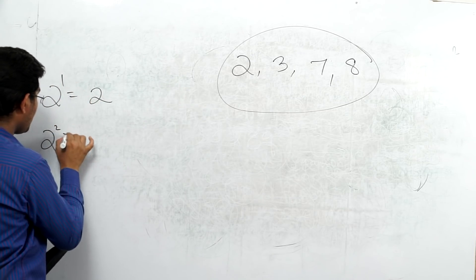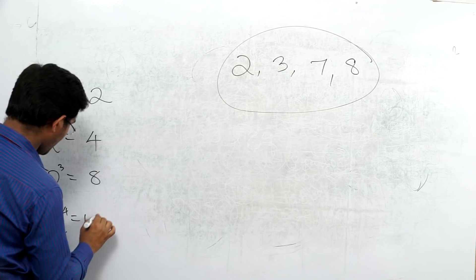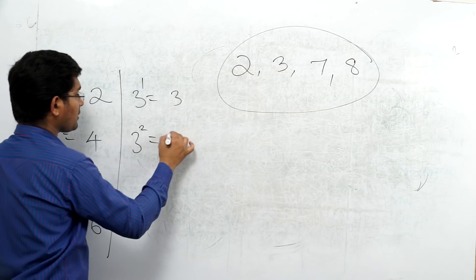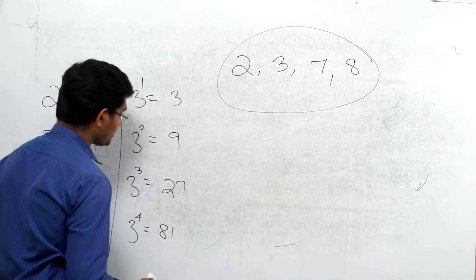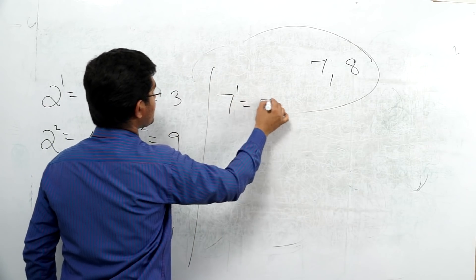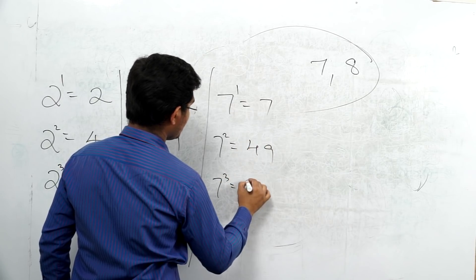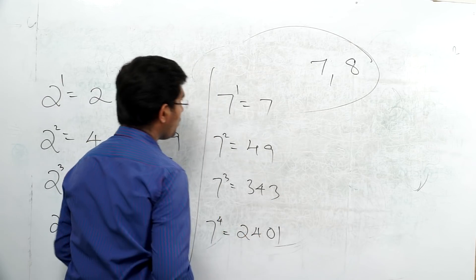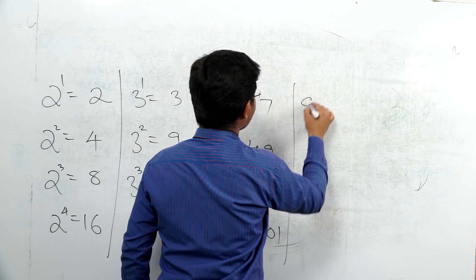For digits 2, 3, 7, and 8, the unit digit follows a cycle of 4. For 2: 2 raised to 1 is 2, 2 squared is 4, 2 cubed is 8, 2 raised to 4 is 16 (unit digit 6). For 3: 3 raised to 1 is 3, 3 squared is 9, 3 cubed is 27 (unit 7), 3 raised to 4 is 81 (unit 1). For 7: 7 raised to 1 is 7, 7 squared is 49 (unit 9), 7 cubed has unit 3.